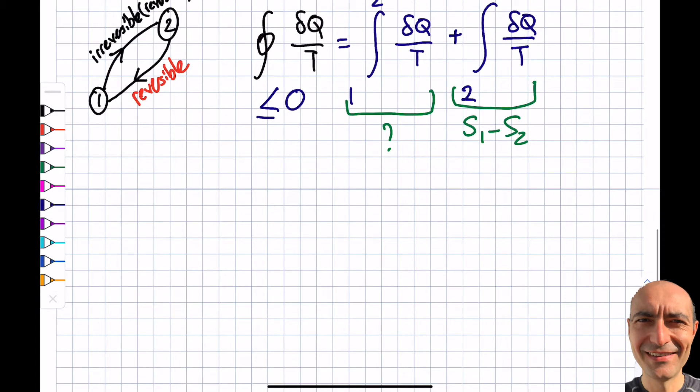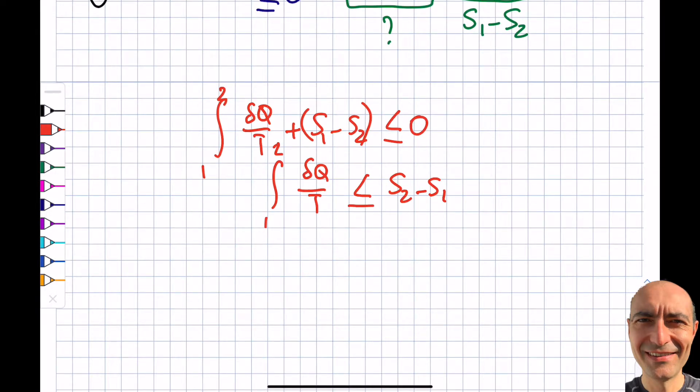But let's write what I have so far. So what it says is 1 to 2, del q by t, plus s1 minus s2, needs to be less than or equal to 0, like I said. So I'm going to move things around. 1 to 2, del q by t, plus s2 minus s1. And I'm going to move things to the other side. s2 minus s1 will be larger than or equal to, equal to when it is reversible, del q by t.